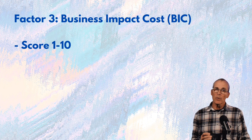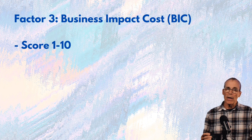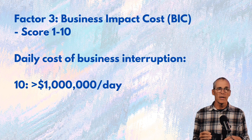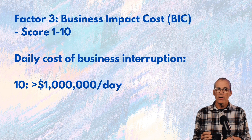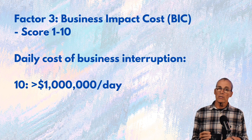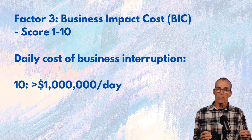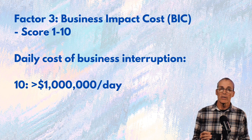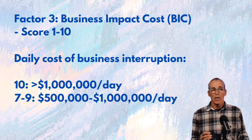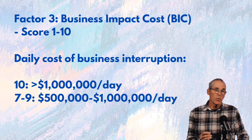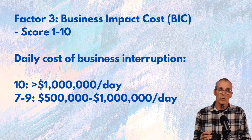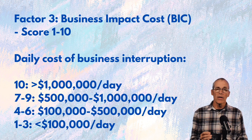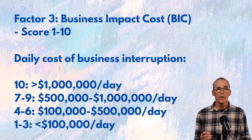Now we're going to look at the Business Impact Cost, scored one to ten. If our facility is worth a million dollars a day, we're going to give it a ten. Somewhere between half a million and a million a day scores further down the scale, and less than $100,000 a day scores one to three.